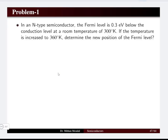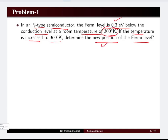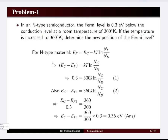Now let us solve a problem on the concentration of acceptor and donor impurity atoms. For an n-type semiconductor, the Fermi level is given as 0.3 electron volts below the conduction level at a room temperature of 300 K. If the temperature is increased to 360 K, determine the new position of the Fermi level. We need to find the new position when temperature changes from 300 K to 360 K for an n-type semiconductor.